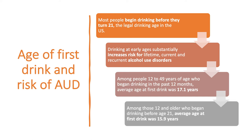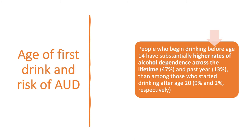Among people 12 to 49 years of age who began drinking in the past 12 months, the average age at first drink was 17.1 years. Among those 12 and older who began drinking before age 21, the average age at first drink was 15.9 years. Of the 4.7 million people who began drinking in the past 12 months during 2011, 82.9% began drinking before age 21, and 61% began drinking before age 18. People who began drinking before age 14 have a 47% higher rate of alcohol dependence across their lifetime.